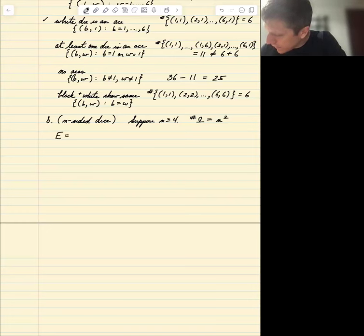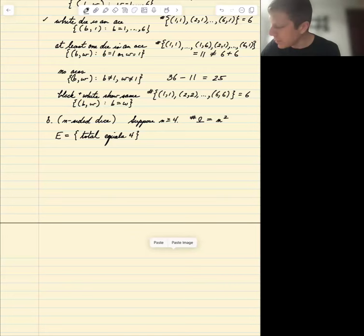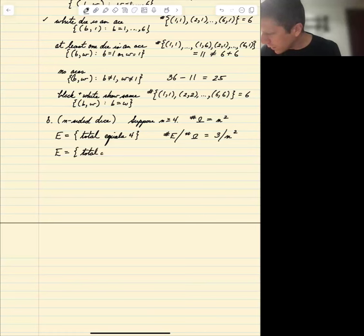And let's consider the event first that the total equals four. Well, how many ways are there for the total equal to four? Well, it really has to be one plus three black, white, two plus two or three plus one. There are three possibilities. And the ratio number of E over number of omega is three over N squared.